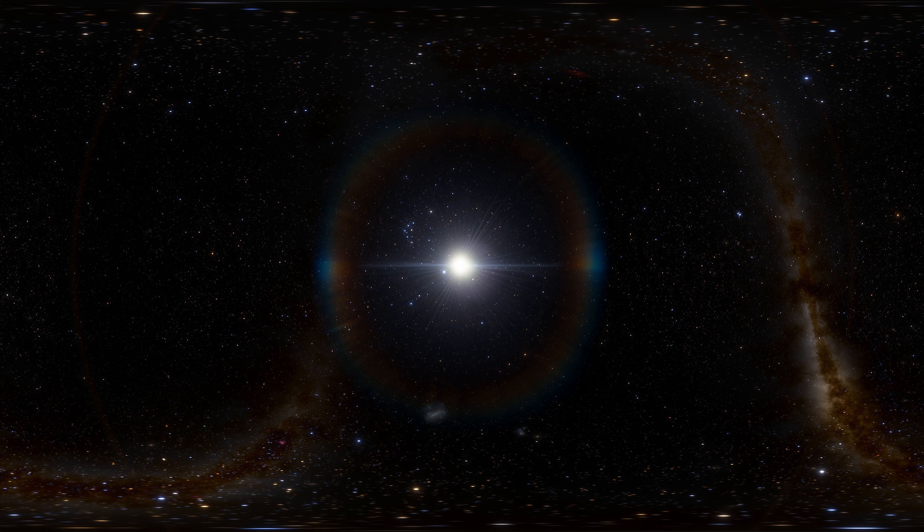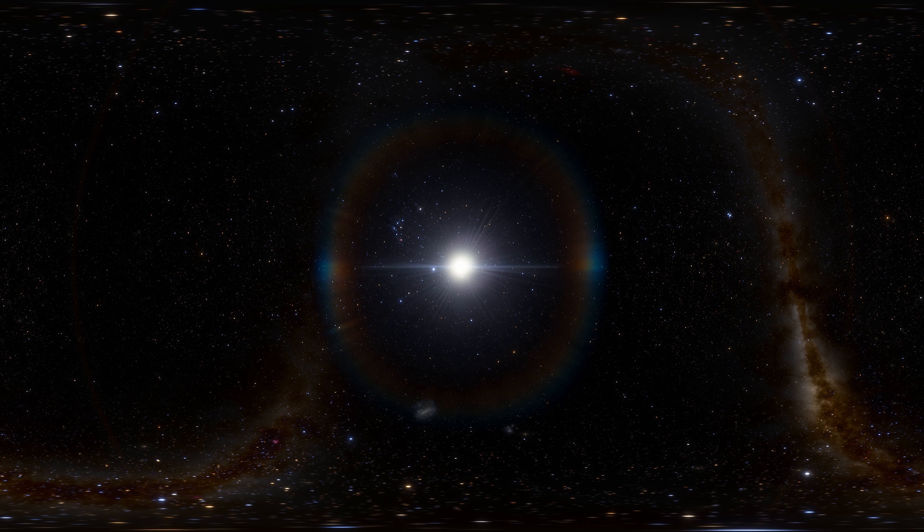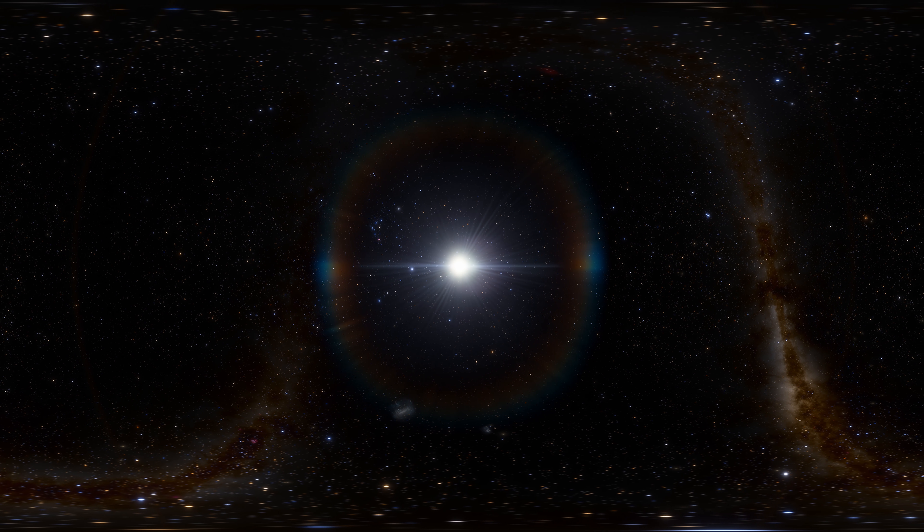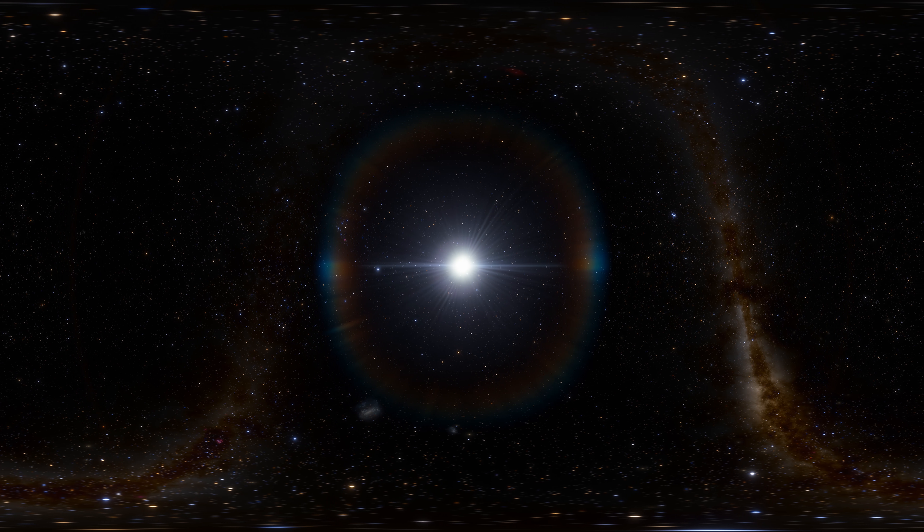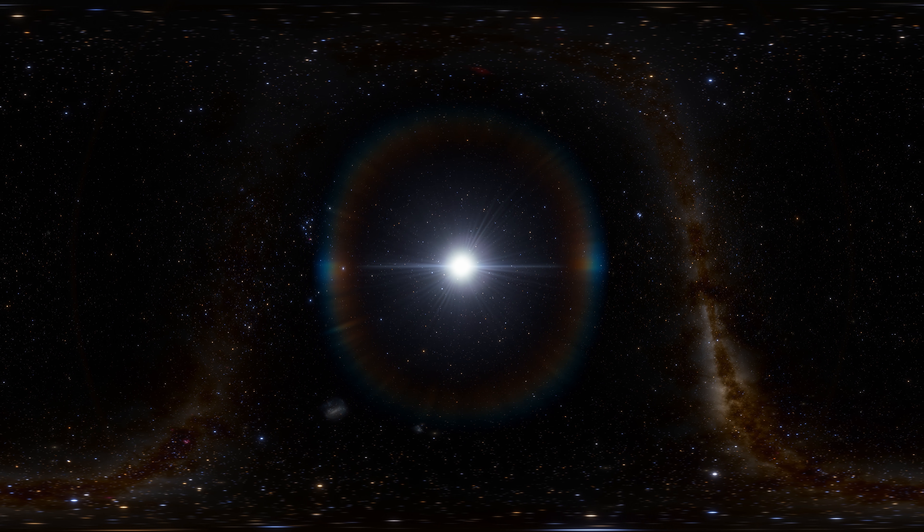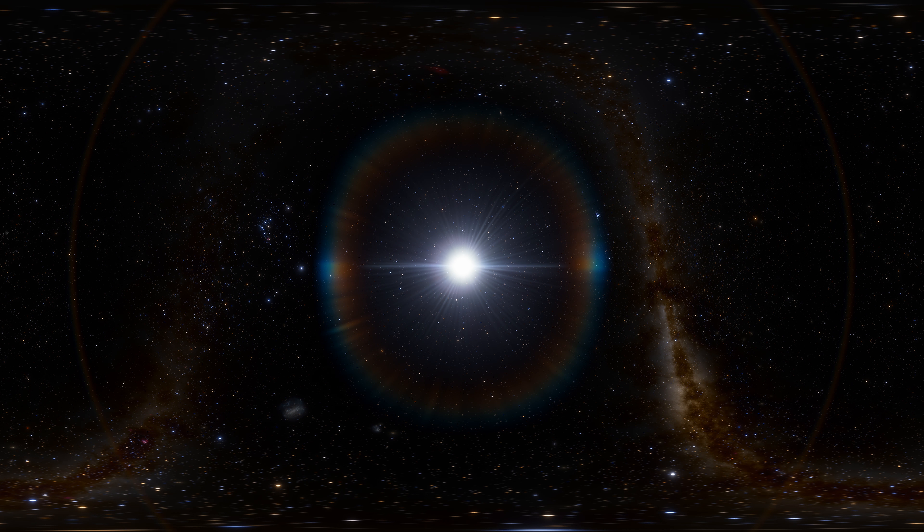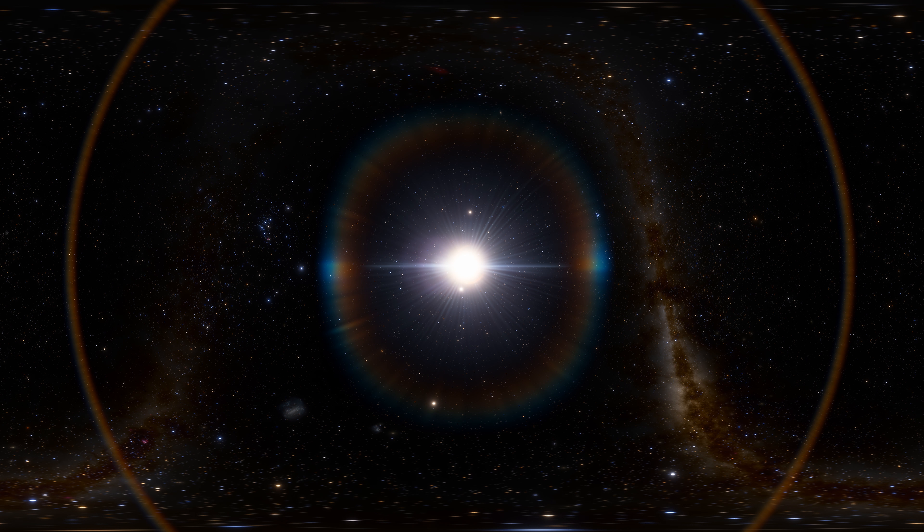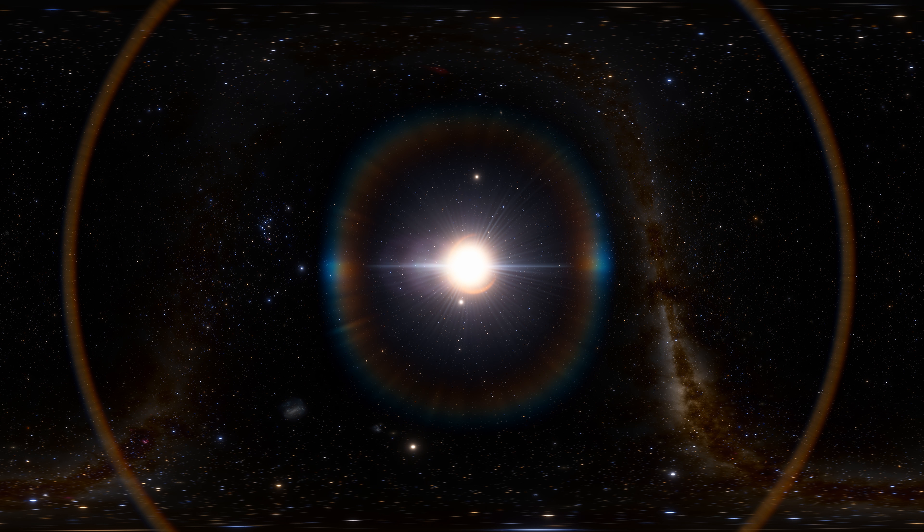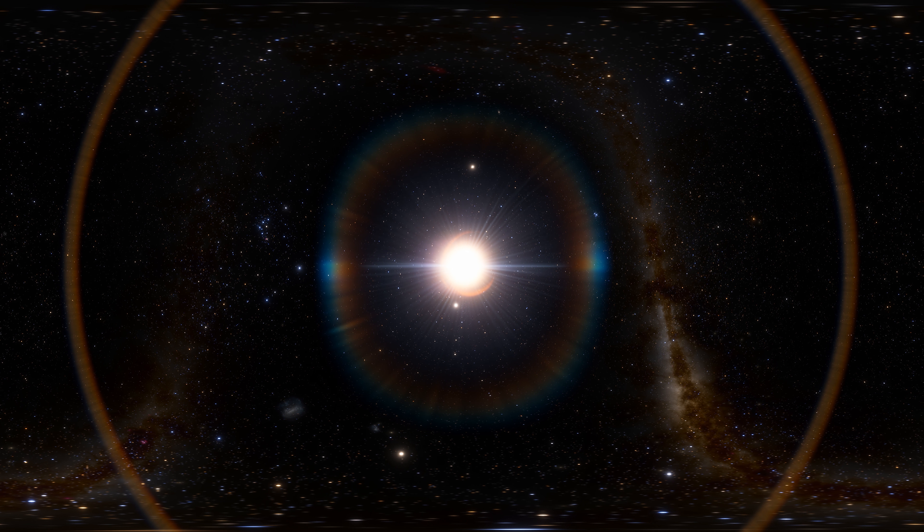Betelgeuse is a red supergiant in the Orion constellation and the ninth brightest star in the night sky. It is placed approximately 640 light-years away from the Sun. Its mass is about 15 to 20 times that of the Sun, and its diameter can be up to 1,200 times bigger than the Sun. If placed in the solar system as a substitute for the Sun, it would reach far beyond the orbit of Mars, and Jupiter would bask in its incandescence.